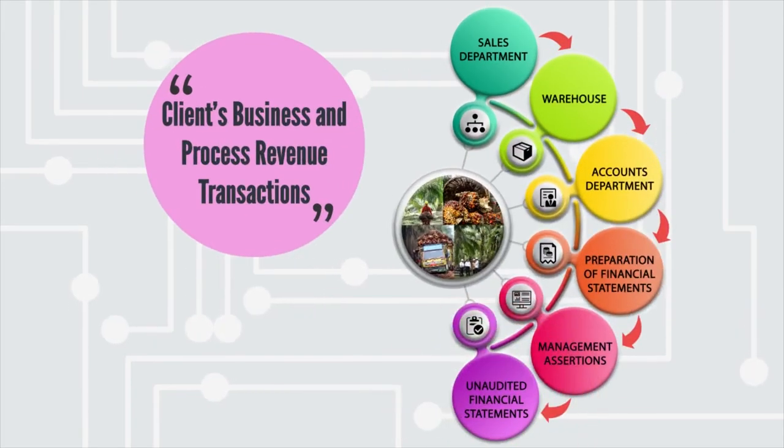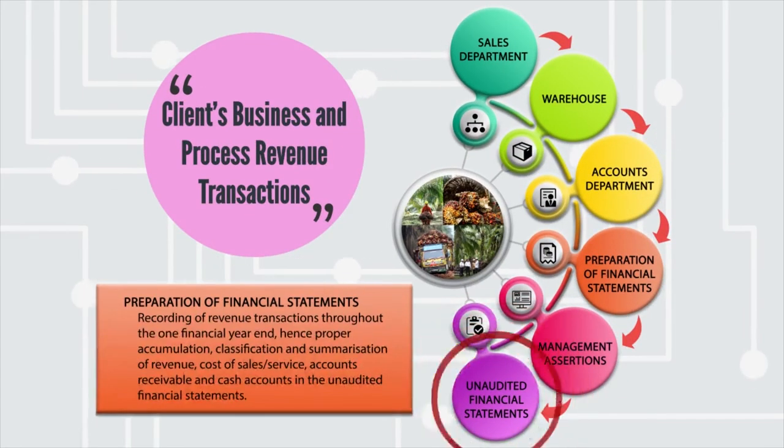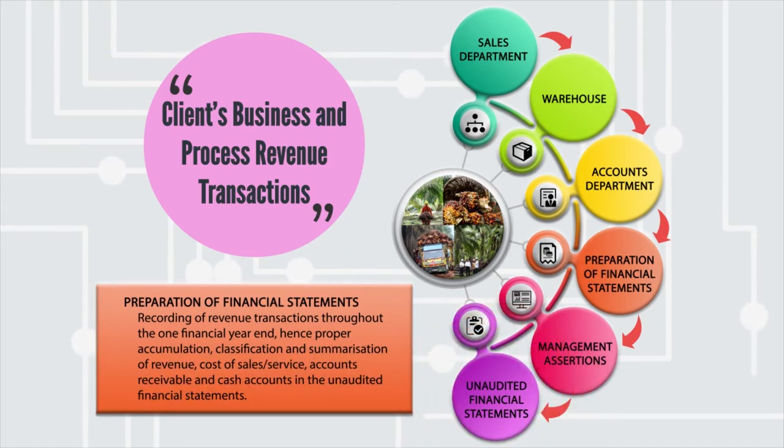From the journal entry, it will then be transferred to the ledger, and this process continues throughout one financial year. These transactions will be accumulated and classified accordingly until year end. It is the management of the business entity's responsibility to prepare these financial statements for year N, and these are the unaudited financial statements.